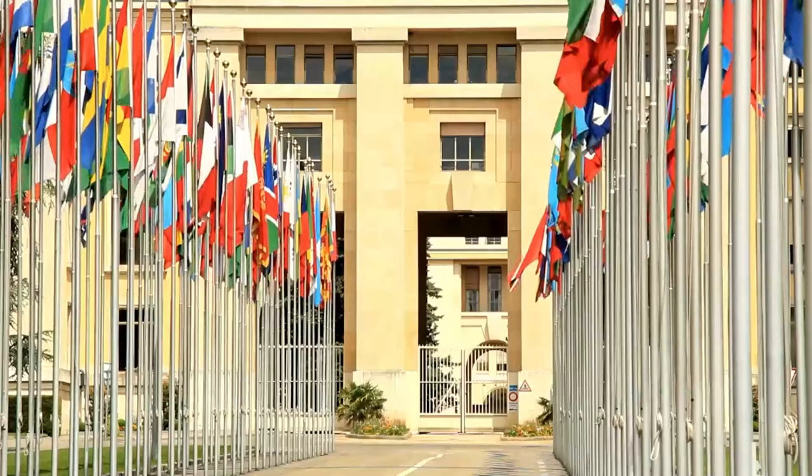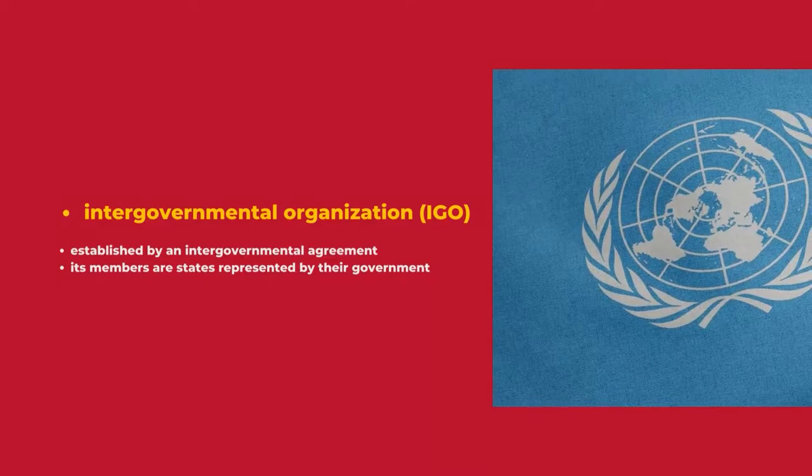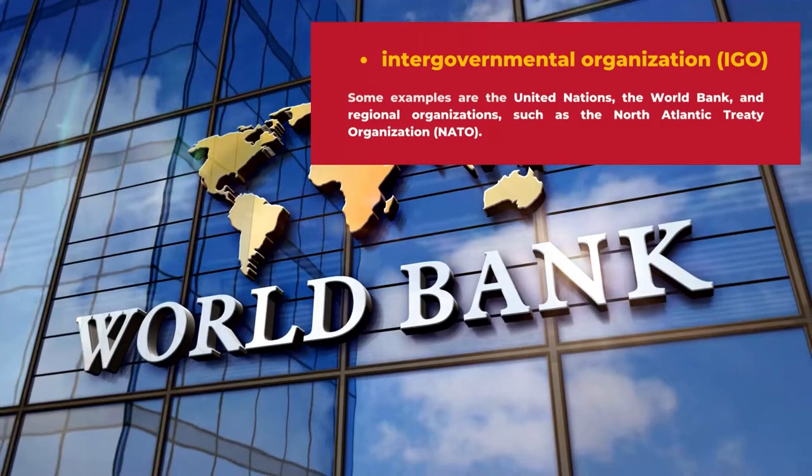What is an international organization? Generally, an international organization is a formal organization with members from three or more states that pursue specific goals. It can be an intergovernmental organization established by an intergovernmental agreement, and its members are states represented by their governments.